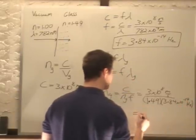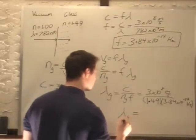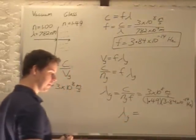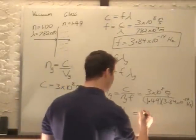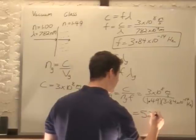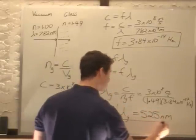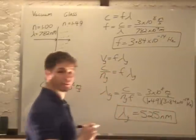This gives us a final wavelength in the glass of 525 nanometers. And that is your final answer.